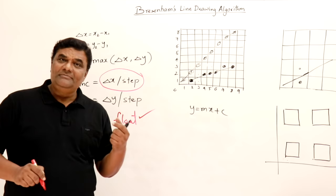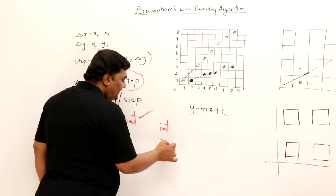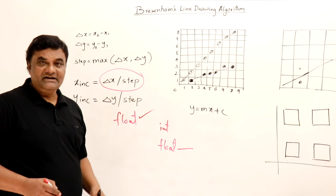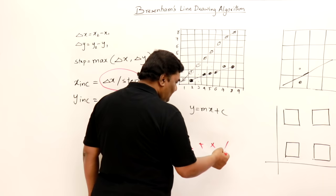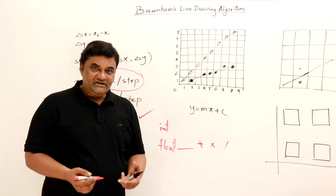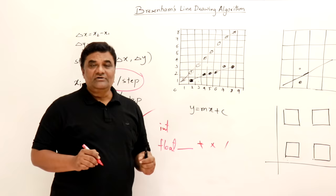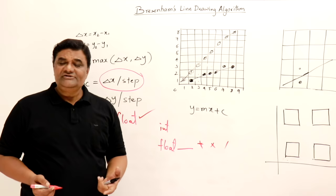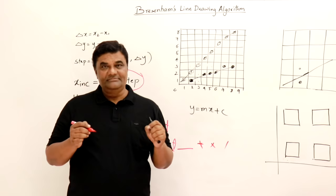The problem with float is that processing time for float operations — addition, multiplication, division — is greater than for integer operations. So DDA unnecessarily generates float values and then truncates or rounds them off, wasting time. Bresenham's algorithm avoids floats entirely and works only with integers.